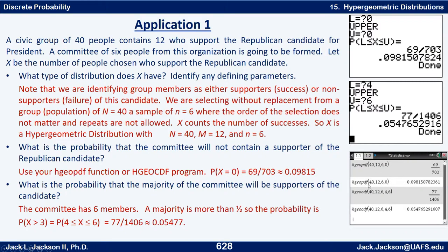Similarly, on the TI Nspire, instead of a program we have built-in functions. The first probability we can compute with HGO PDF 40, 12, 6, 0 and get the same result. For the majority probability, we use HGO CDF 40, 12, 6, 4, 6. Entering it normally gives a fraction; pressing CTRL+Enter gives the decimal version.